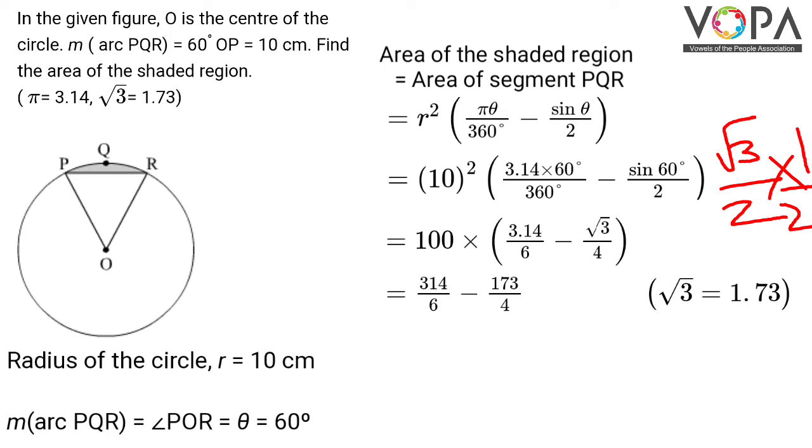When we multiply 100 with 3.14, we get 314/6. When 100 multiplies √3, we get 173/4.